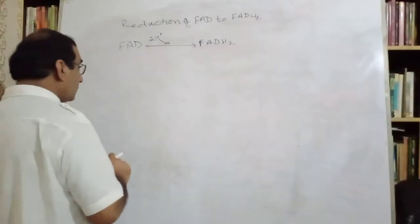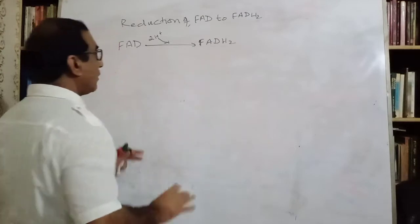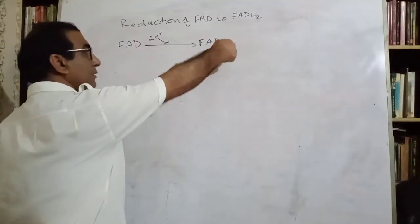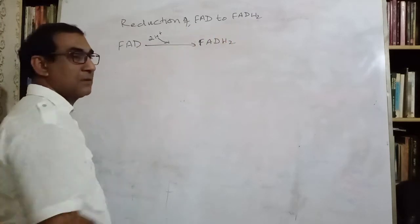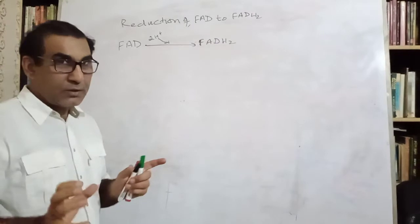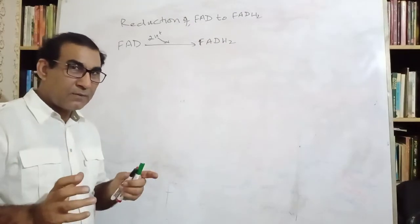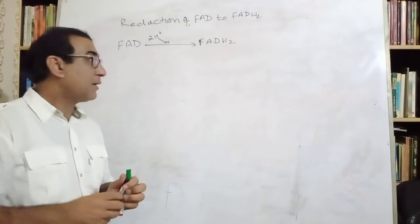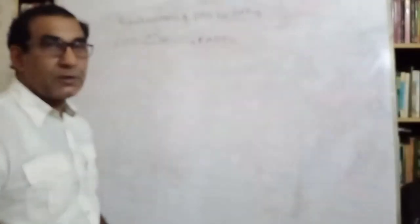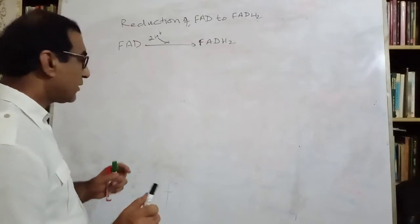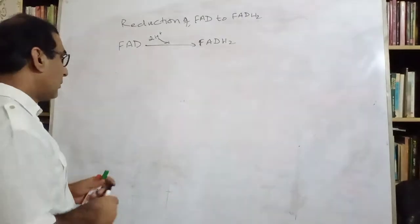Well, to understand all this, where these two hydrogens are attached, we have to see through the structure. By understanding the structure of Flavin molecule, we would be able to understand the addition of these two hydrogens. Let us first see the structure of Flavin molecule.